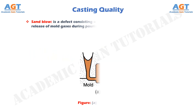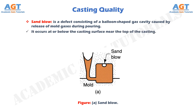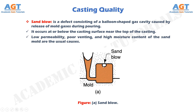Sand blow is a defect consisting of a balloon shaped gas cavity caused by release of mold gases during pouring. It occurs at or below the casting surface near the top of the casting. Low permeability, poor venting, and high moisture content of the sand mold are the usual causes.